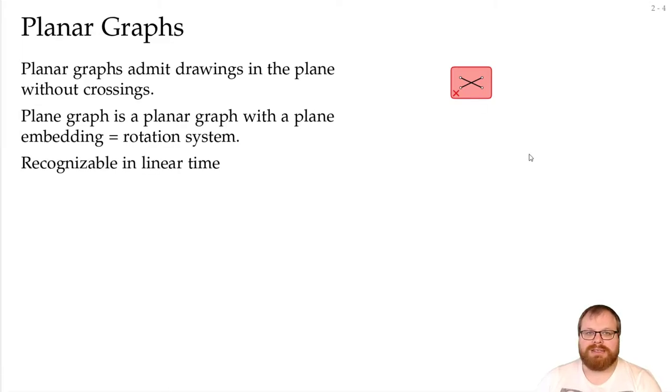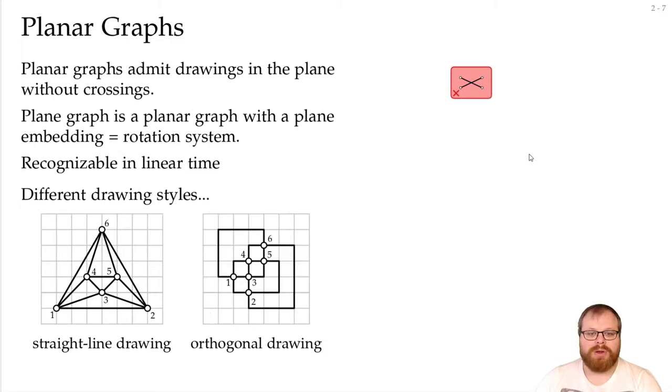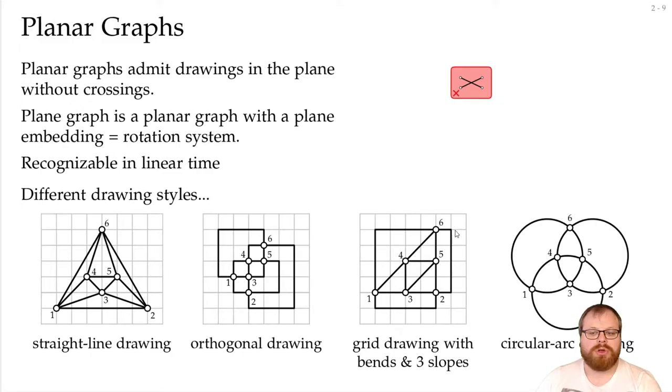We can recognize those graphs in linear time and we have looked at many different drawing styles. For example, we can do straight line drawings, orthogonal drawings if we have degree at most four, grid drawings where we have bends and at most three slopes, or circular arc drawings. There are of course many more, so this is just a few small examples.